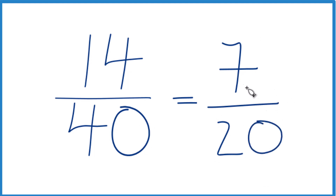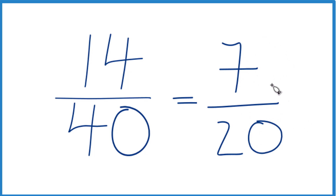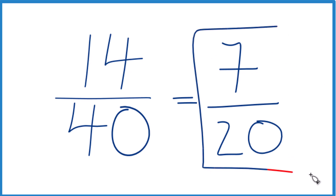They have the same value — they're just written in different forms. For 7 twentieths, we can't simplify this any further. The only number that goes into both 7 and 20 evenly is 1. And if you divide 7 by 1 and 20 by 1, you get 7 twentieths. So this is in lowest terms.